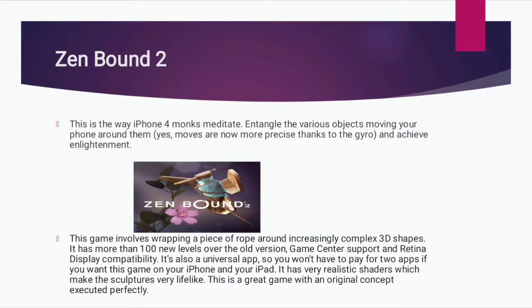Zen Bound 2: This is the way iPhone 4 monks meditate — entangle various objects by moving your phone around them. Moves are more precise thanks to the gyro. This game involves wrapping a piece of rope around increasingly complex 3D shapes. It has more than 100 new levels over the old version, Game Center support and retina display compatibility. It's also a universal app, so you won't pay for two apps for both iPhone and iPad. It features very realistic shaders making the sculptures lifelike — a great game with an original concept executed perfectly.